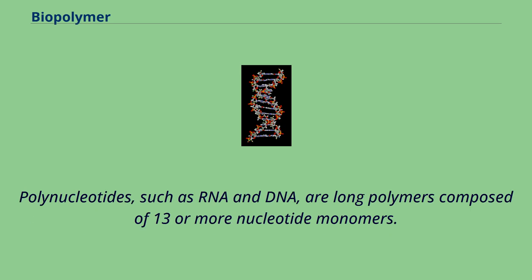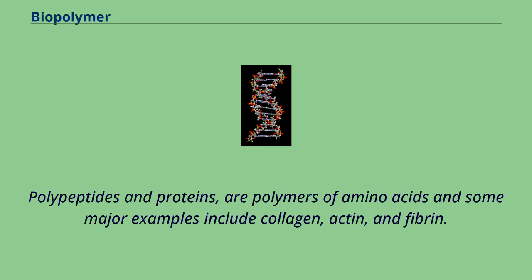Polynucleotides, such as RNA and DNA, are long polymers composed of 13 or more nucleotide monomers. Polypeptides and proteins are polymers of amino acids, and some major examples include collagen, actin, and fibrin.